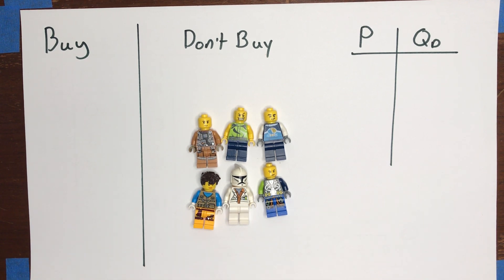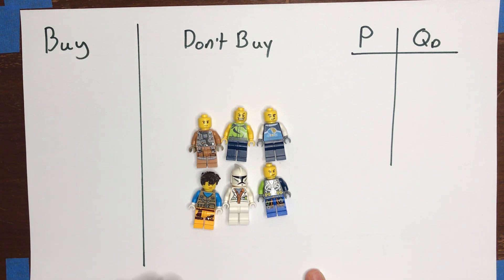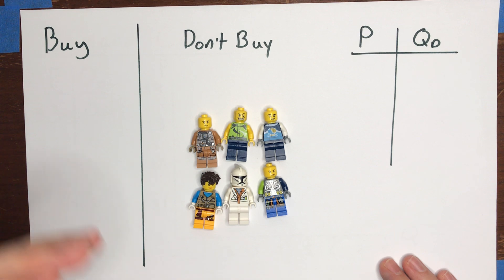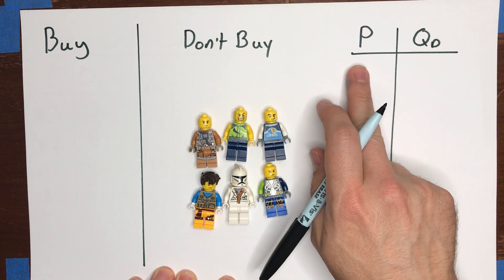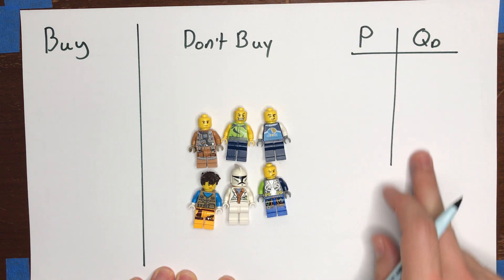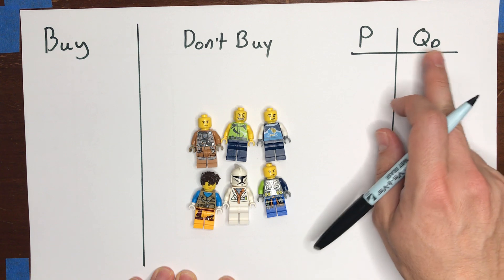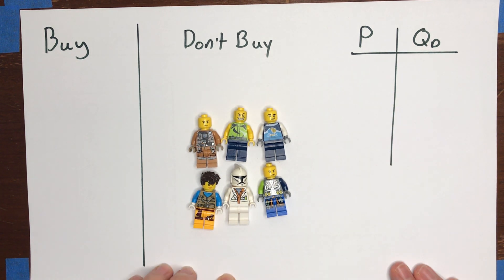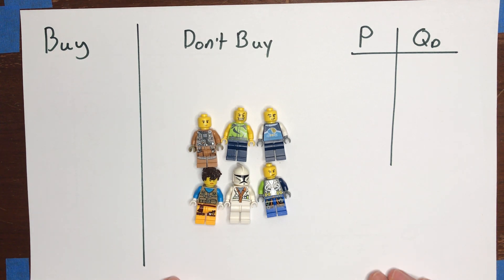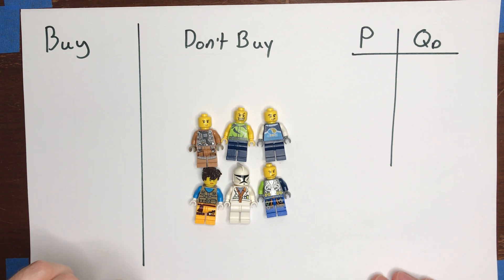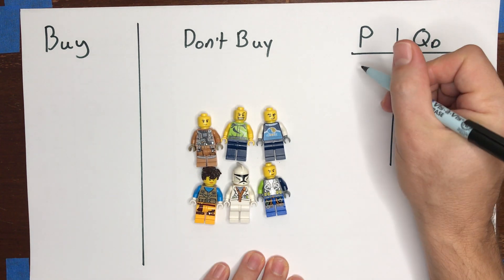We're going to imagine that these six potential consumers are all deciding whether or not to buy a drink — let's say a 16-ounce Coca-Cola. I'm going to mention different prices and tell you how many of these buyers would be willing to buy at each price. I'll start with a relatively high price for a can of soda, then drop the price and see how many people would purchase. I'll keep track of the price and the quantity demanded — that's the QD subscript — at each price.